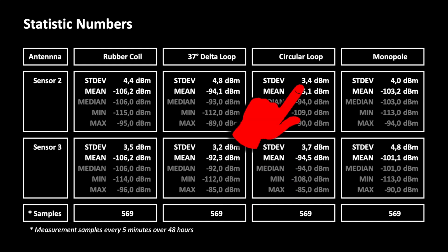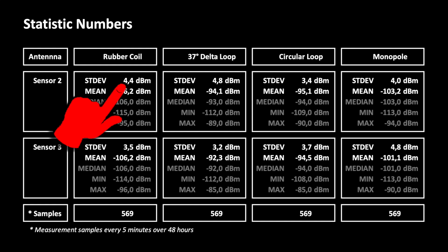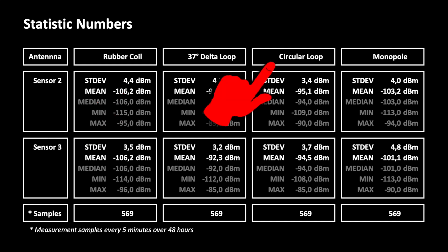As you can see, some antennas are coping better than others with a volatile radio channel. Circular loop antennas are achieving the best results in that respect.